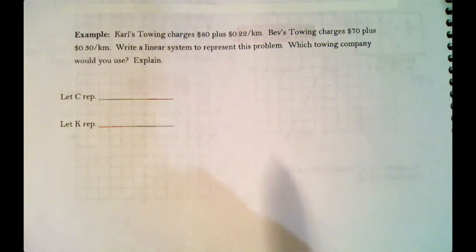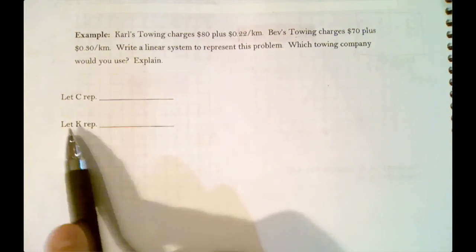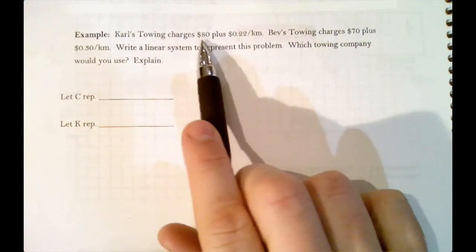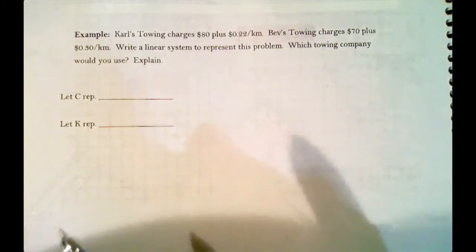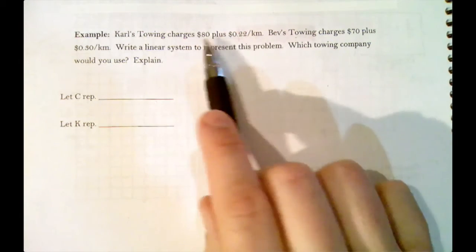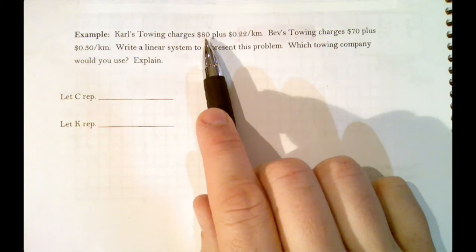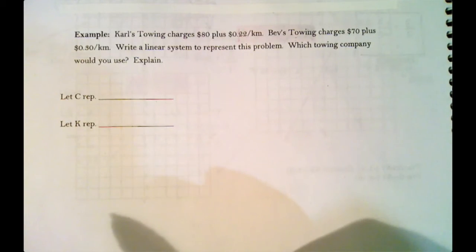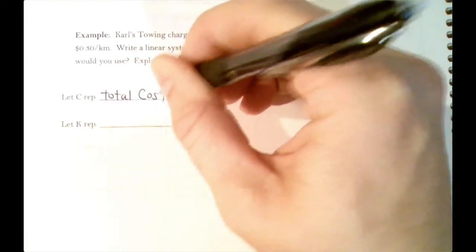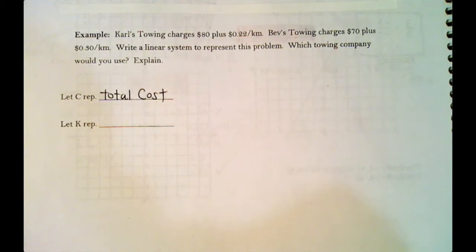Well, declaring our variables, I've already kind of started declaring. Let's say let c represent something and let k represent something. So that means there's something in here that we don't know, and we're going to define them with letters. Well, if we read carefully, it says Carl's company or Carl's towing charges $80 plus 22 cents per kilometer. So if we're going to hire Carl's towing, one question you might have is how much is it going to cost? That's what we don't know. If we just hire him and we don't go anywhere, it's going to cost us $80. But if we travel somewhere, it's going to cost us more. So the cost is something we don't know, so we can say let c represent the total cost.